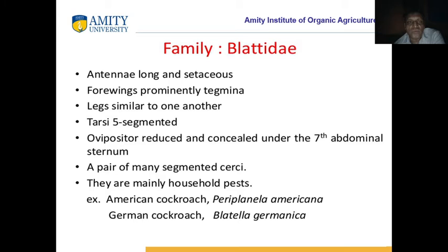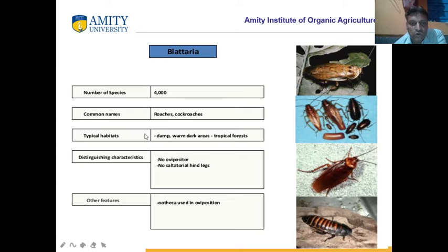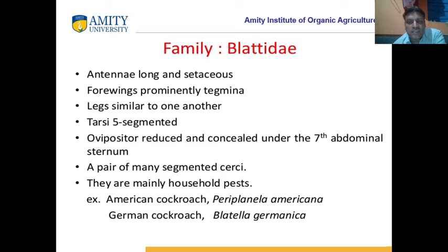This is the position of Blatteria. The number of species are 4,000. Common name is cockroach. The habitat is any area which is wet — where moisture is there, you will find cockroach. No ovipositor. No saltatorial hind legs — they have no jumping type of legs. Ootheca is used in oviposition; they lay their eggs with the help of the ootheca.